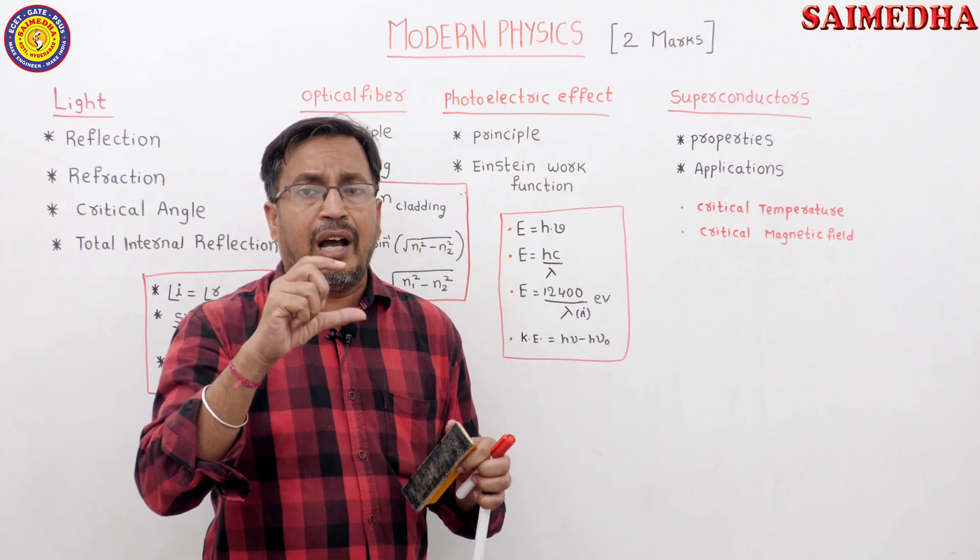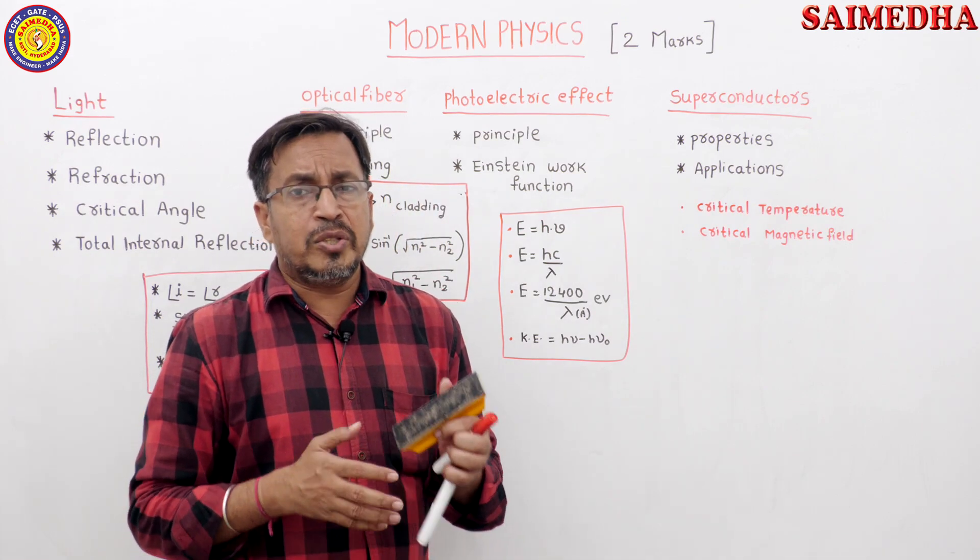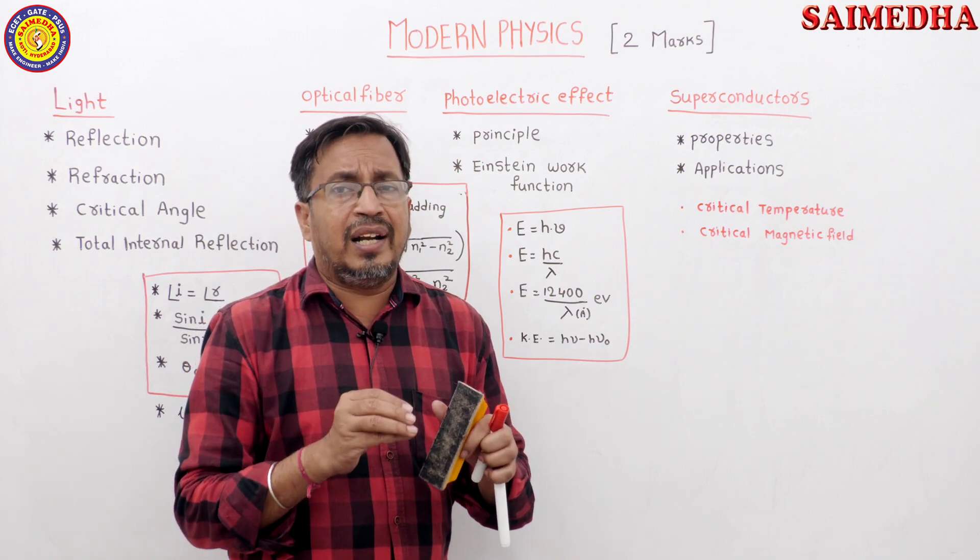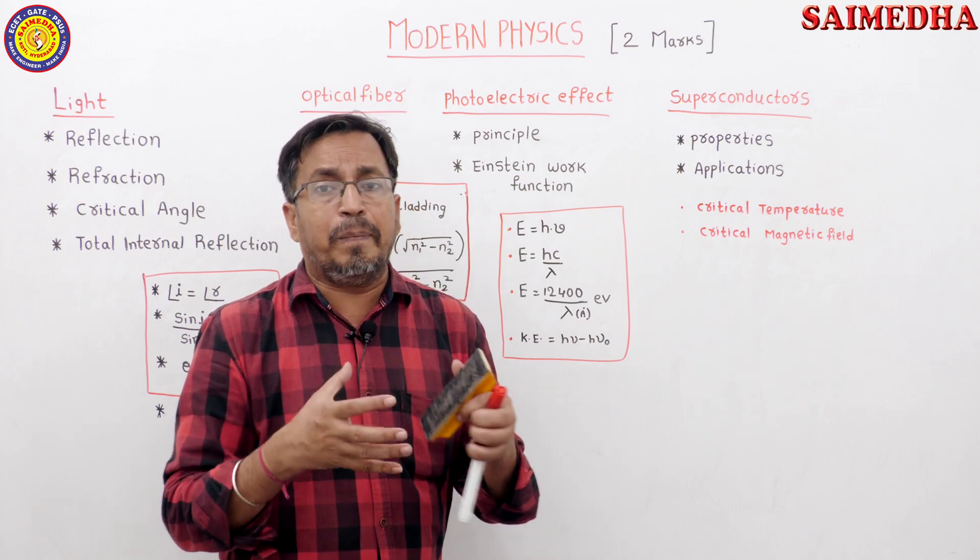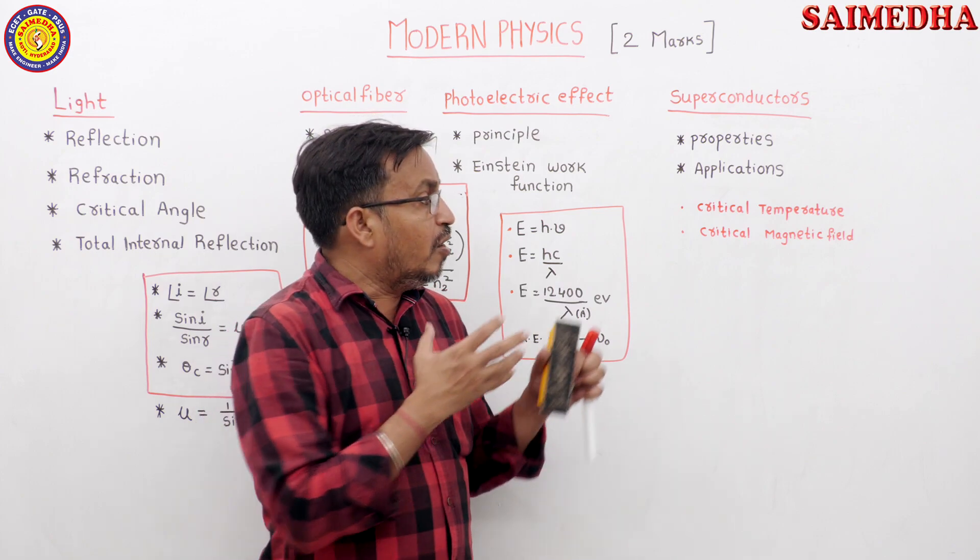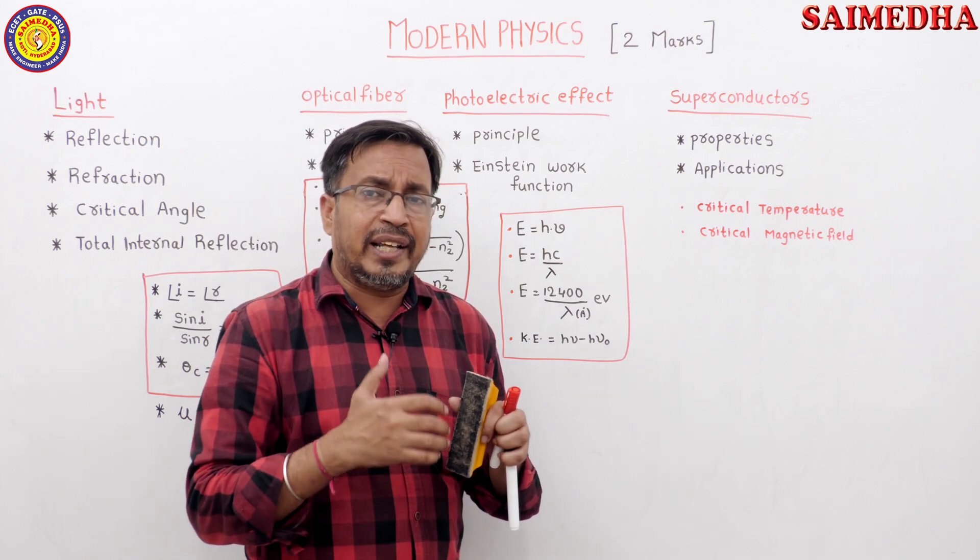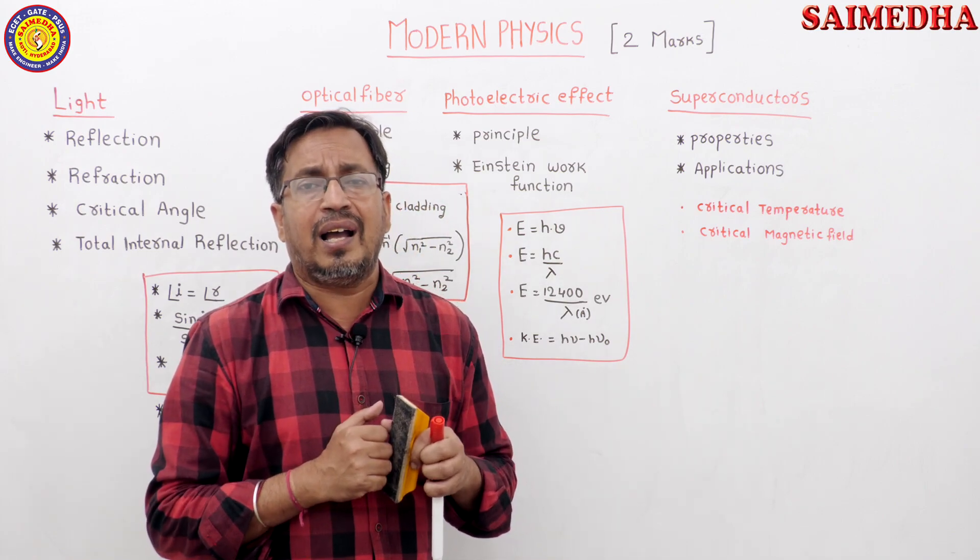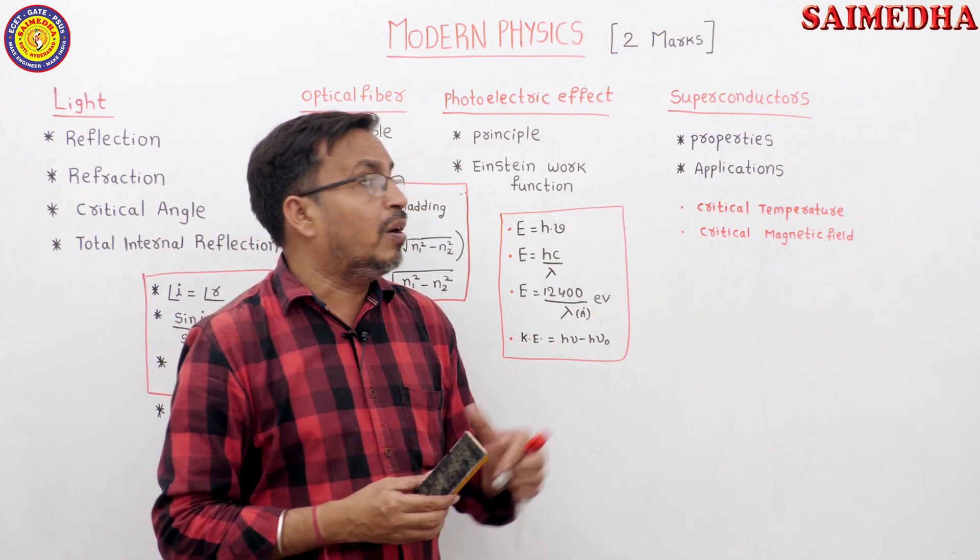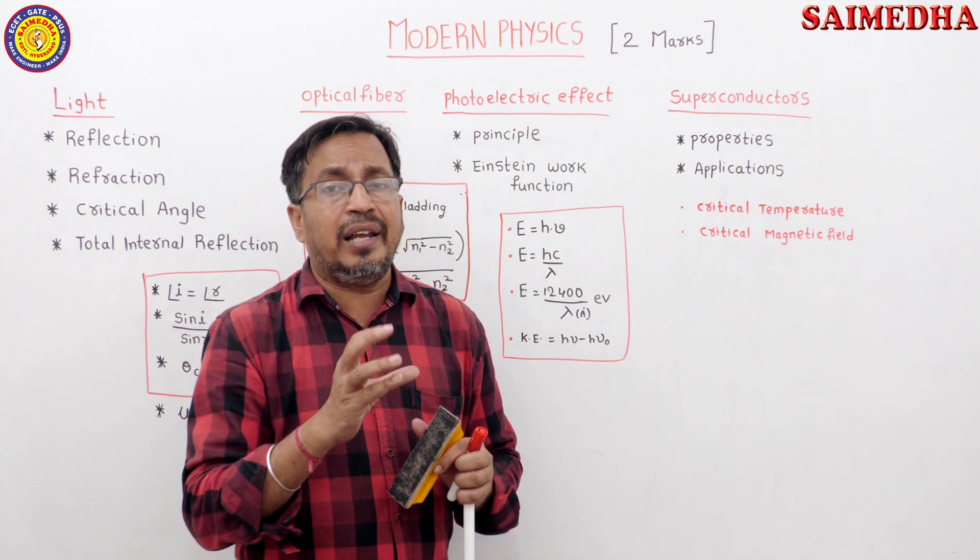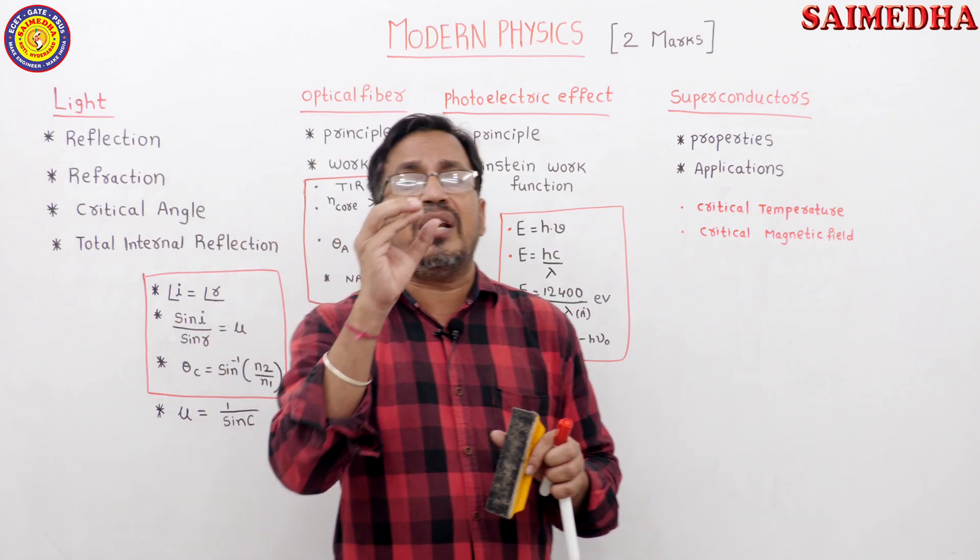We discuss some fundamentals like Einstein equation, threshold energy and stopping potential. We prepare short notes on superconductors, including definition of superconductor resistance and conductance, critical temperature, critical magnetic field, and superconducting material properties like diamagnetic and paramagnetic materials.